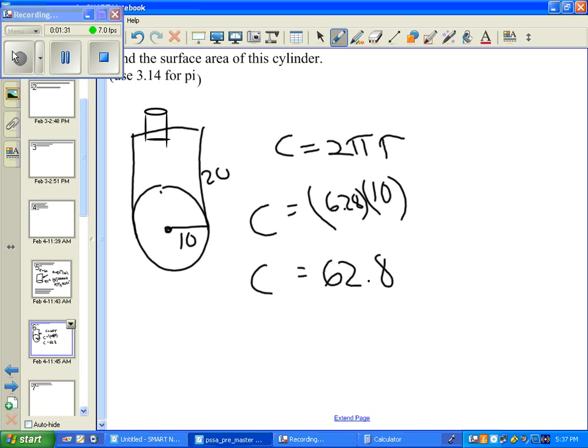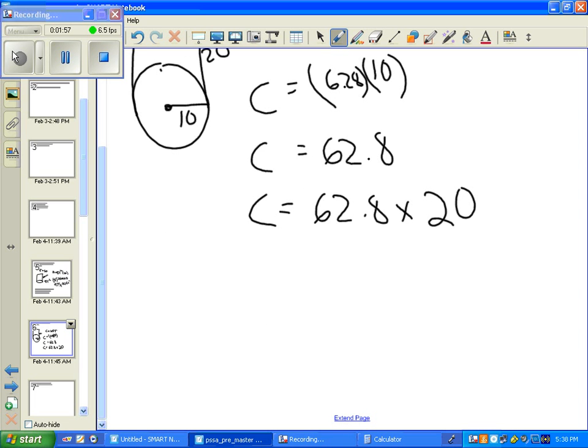However, we're going to be putting 20 of these on top of each other to get the height. So what we have to do is multiply this times 20. So if we take this C, 62.8 times 20, we can also say C equals 62.8 times 10, which would be 628.